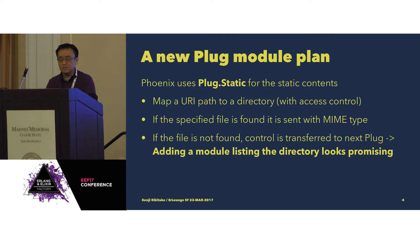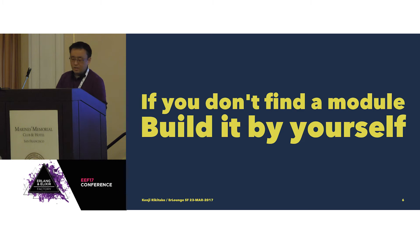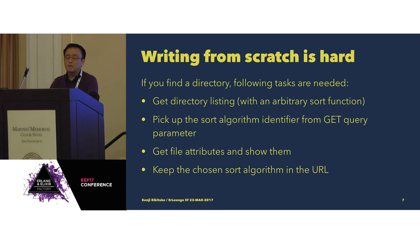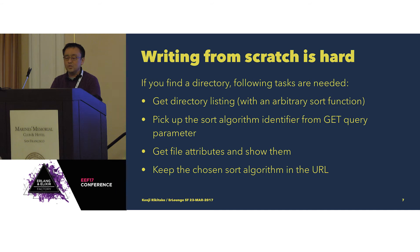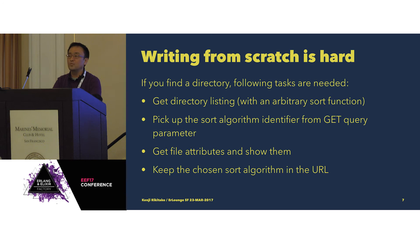So adding a module for listing directories looks promising to realize this. If you don't find it, you've got to invent it anyway. Writing from scratch is very hard, because just showing directory contents is actually very complicated. You've got to first get the directory listing, pick up the sort algorithm identifier from the GET query parameter, get file attributes and show them, and keep the chosen sort algorithm in the URL so you can switch the sort direction by time, by file name, or whatever.